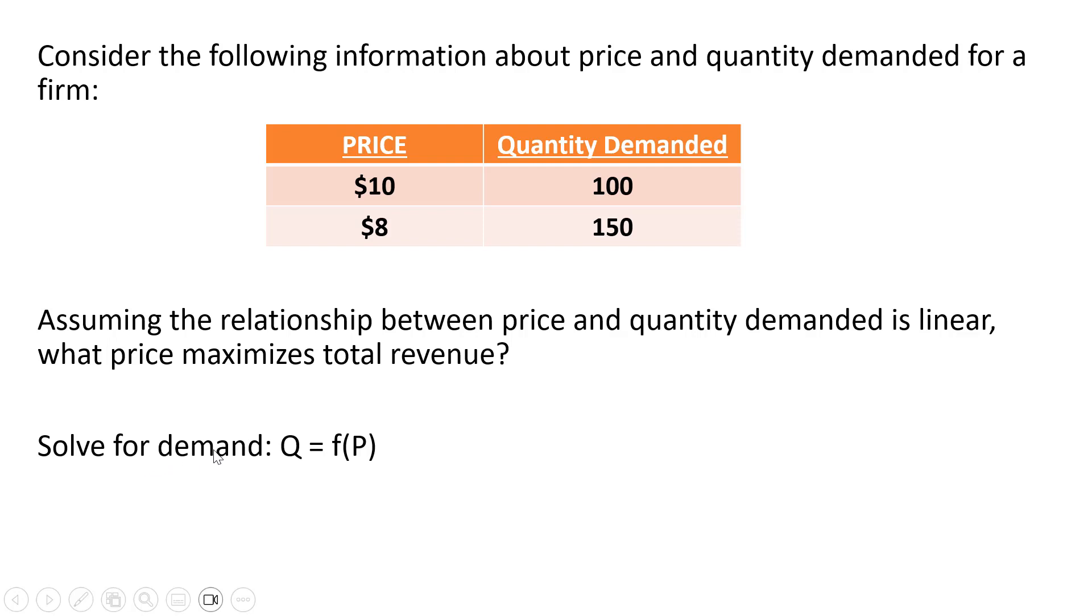First thing we're going to do is solve for the demand equation, where the quantity demanded is a function of price. We're going to specify a linear format for that, so Q equals a minus bP. b is going to be the slope, which is the change in quantity demanded divided by the change in price. We can calculate the slope from the information in the table.